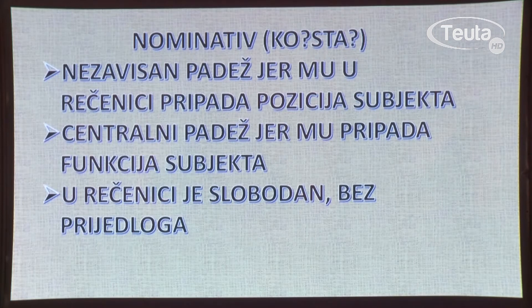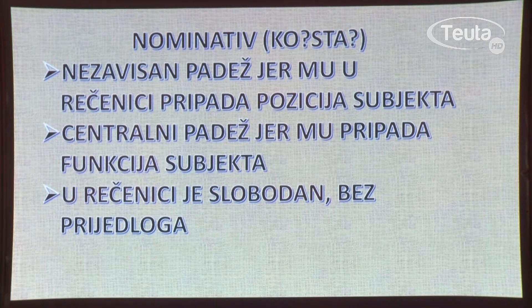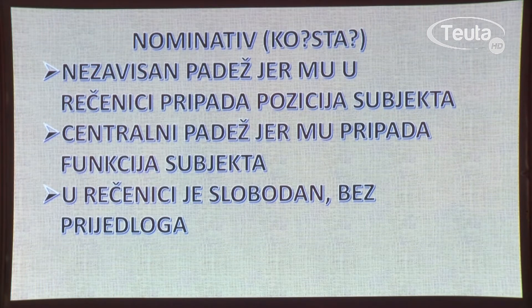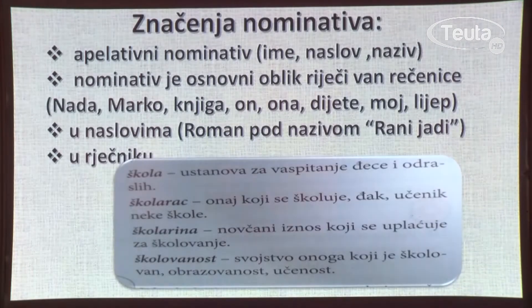Padeži u rečenici mogu imati više značenja. Krenut ćemo od nominativa. Nominativ je prvi padež u padežnom sistemu i dobija se pomoću pitanja ko, šta. To je nezavisan padež jer mu u rečenici pripada pozicija subjekta. Ujedno je i centralni padež jer mu pripada funkcija subjekta. Vi znate da je subjekat glavni član u rečenici. U rečenici je nominativ slobodan, bez prijedloga. Nominativ je osnovni oblik riječi i van rečenice.